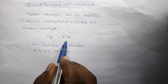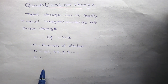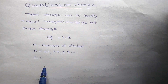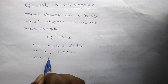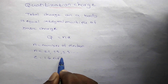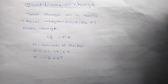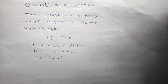And what is e? e is the basic charge or elementary charge. Its value is 1.6 into 10 power minus 19. Why is it called the basic charge? Because it is the smallest possible value of charge.